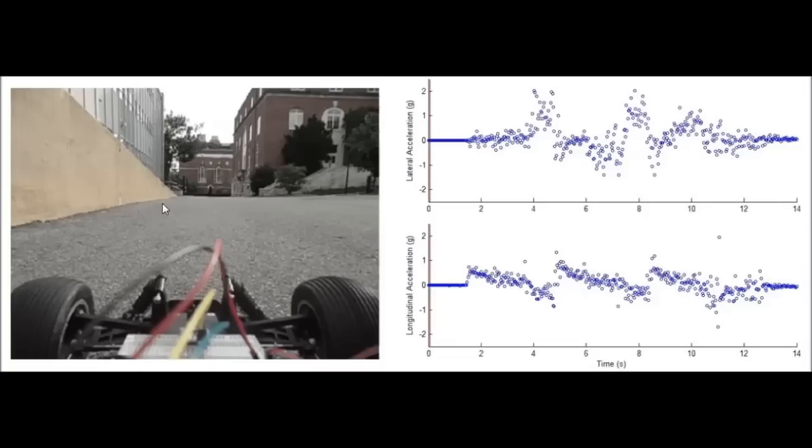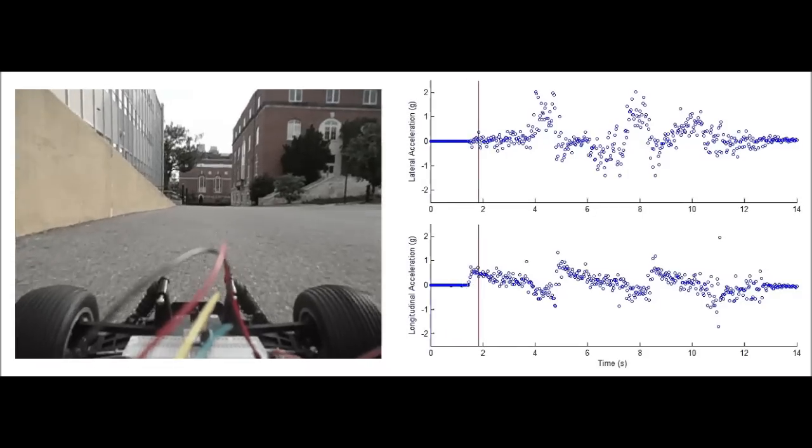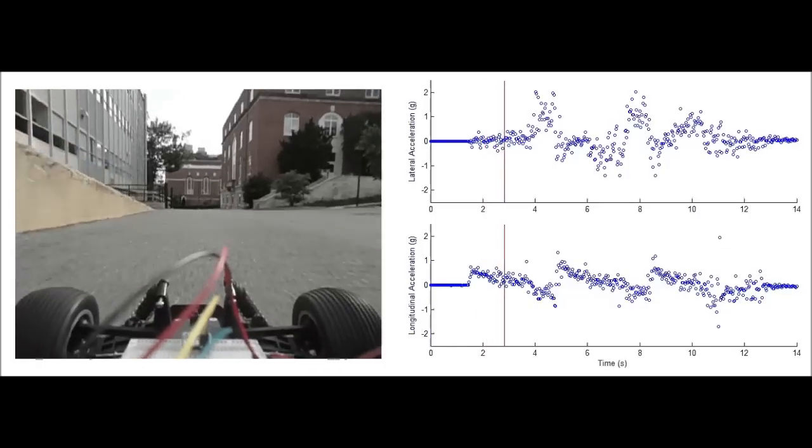Now we can take a closer look at a slow motion version of the video. On the right, you'll see the data I recorded, and this red bar will slide along to show you where in the dataset we are in the video. We start out at zero G's acceleration while we're not moving, then see a big spike in longitudinal acceleration when I take off.